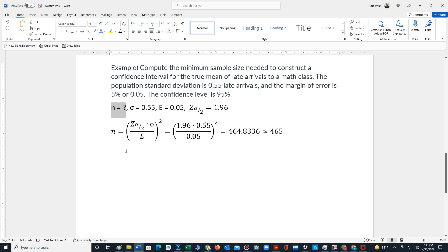n is the unknown—that's the value we're looking for. The population standard deviation is 0.55. e, the allowed margin of error, is 5%, which we write as a decimal, 0.05.